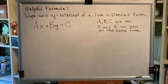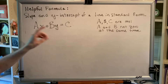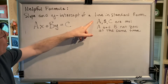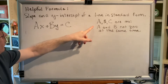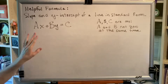The topic of this video is deriving a formula for the slope and y-intercept of a line in standard form. Standard form of a line is ax plus by equals c, where a, b, and c are real numbers and a and b are not zero at the same time.